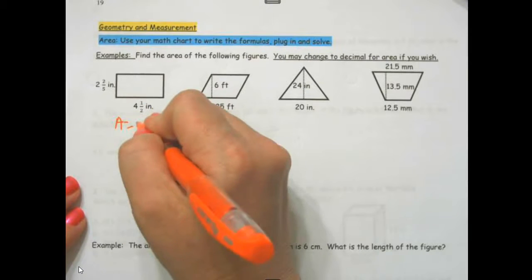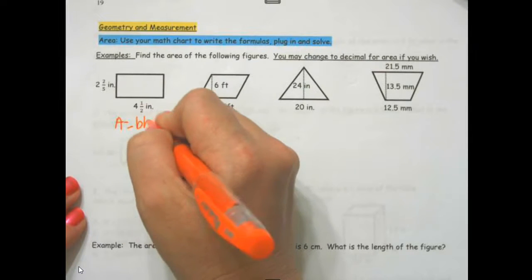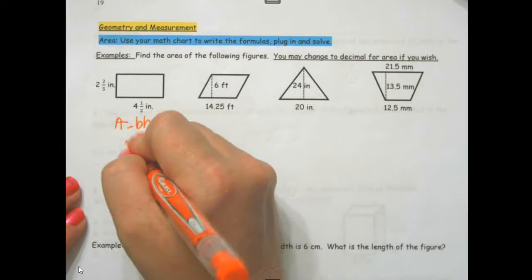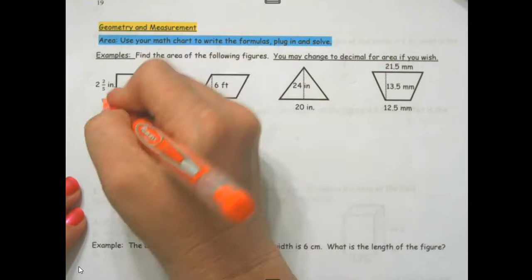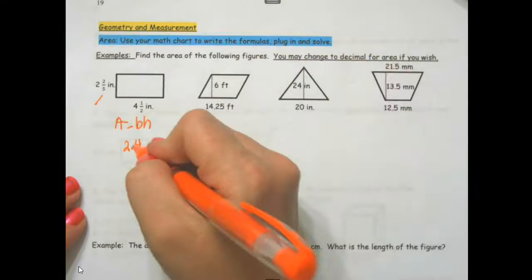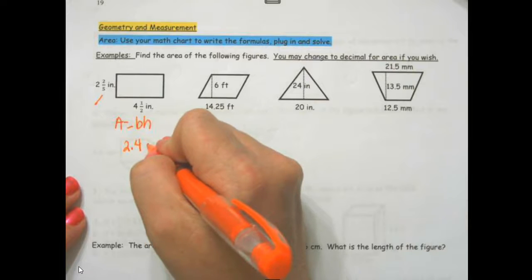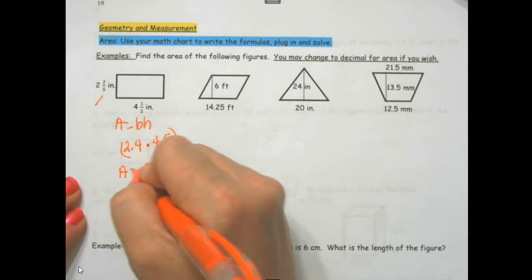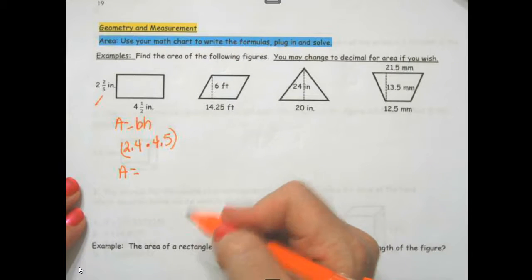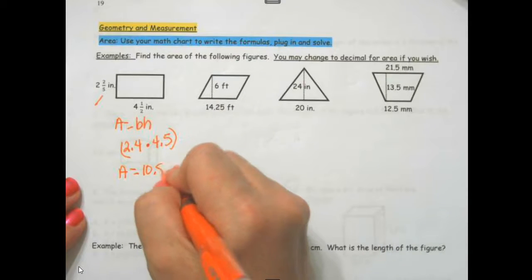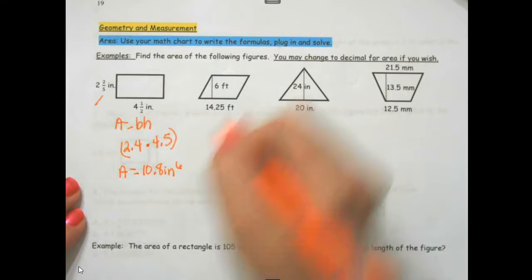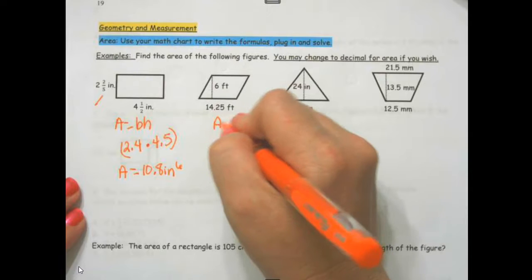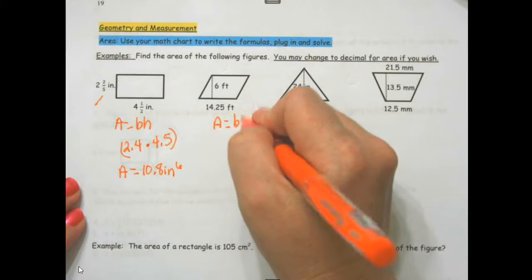Area equals base times height, 2.4 because I changed this into a decimal times 4.5. Area equals 10.8 inches squared. This is a parallelogram. Area equals base times height, 14.25 times 6. Area equals 85.5.